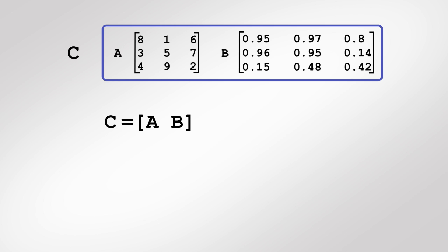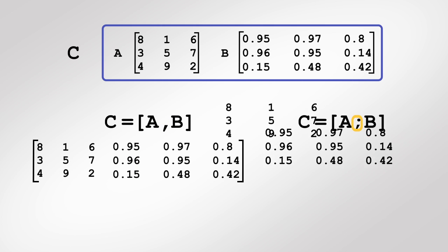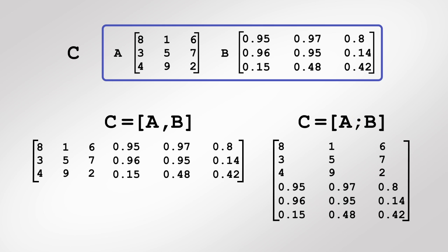In a similar way, we can concatenate two arrays by using square brackets. We can separate the two variable names with a comma to horizontally concatenate the arrays, and with a semicolon to vertically concatenate them.